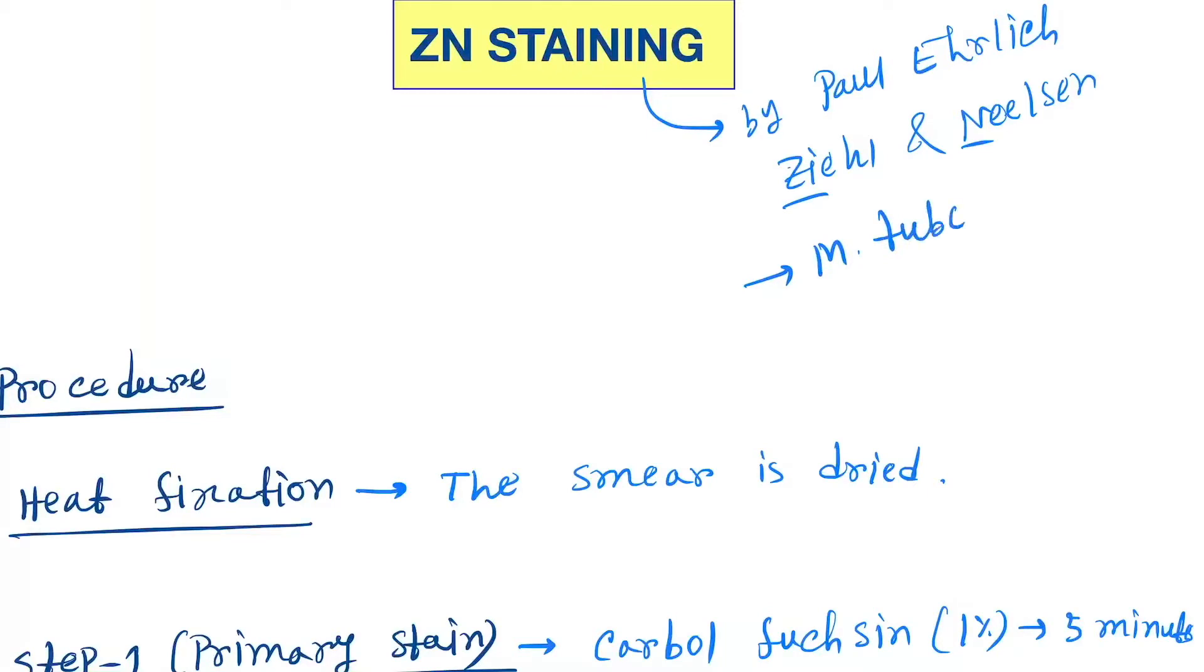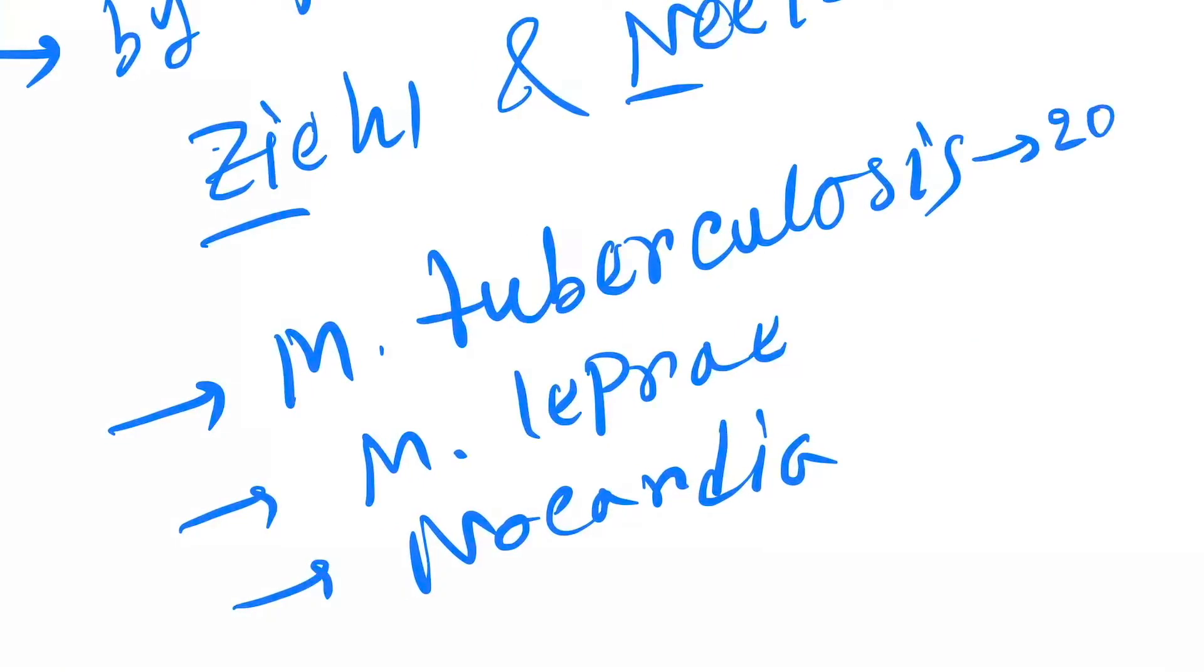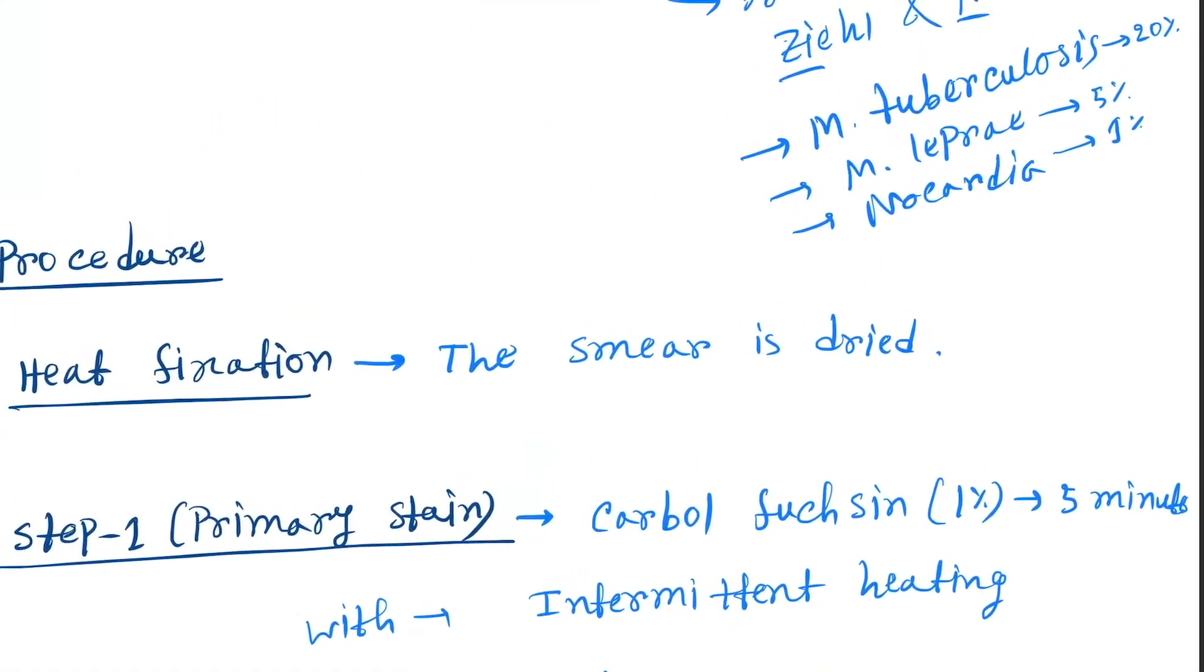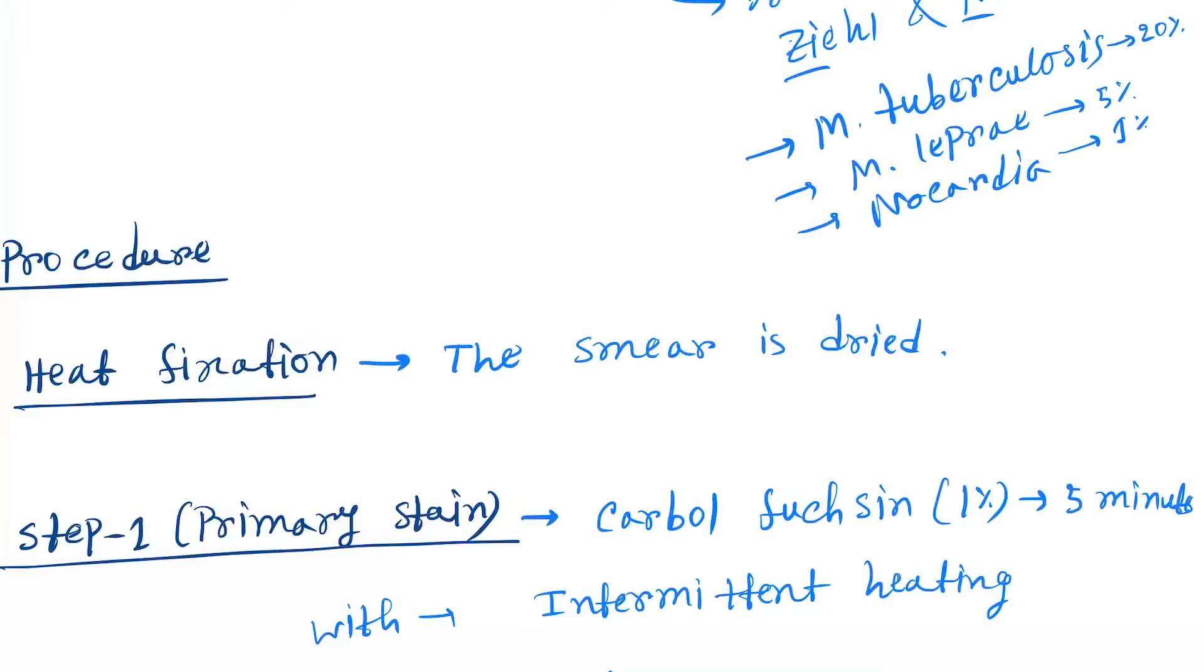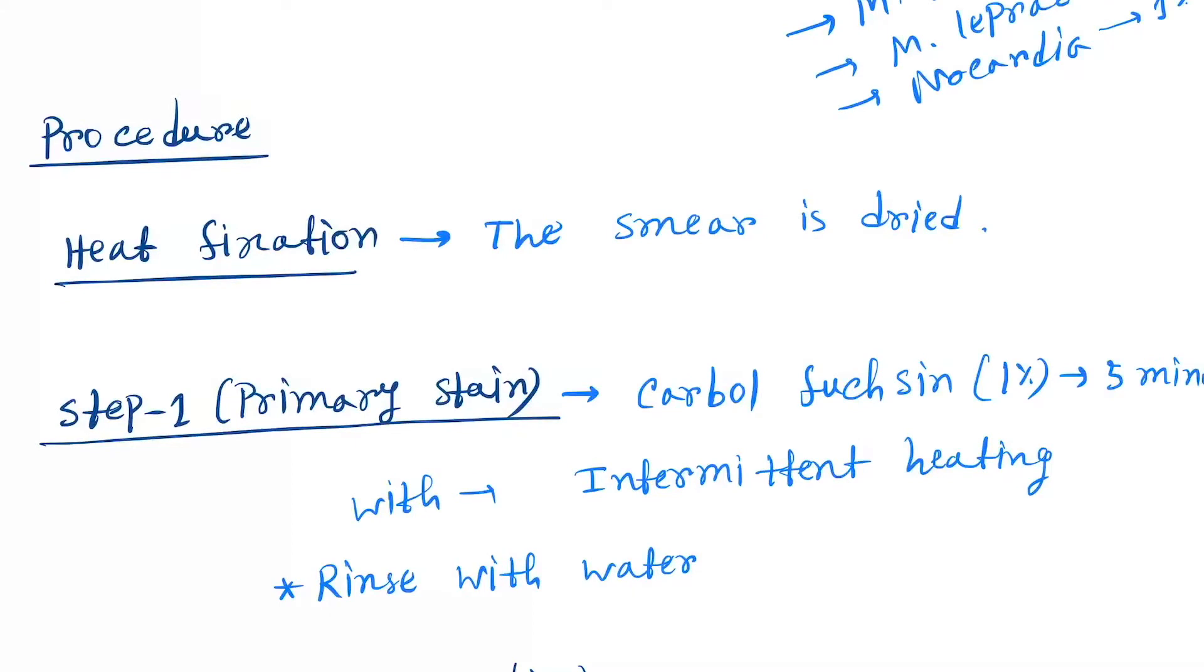It is done for Mycobacterium tuberculosis, Mycobacterium leprae, and Nocardia. Different concentrations of acid are used: 20% for Mycobacterium tuberculosis, 5% for leprae, and 1% for Nocardia. It's also used for other organisms like parasites such as Cryptosporidium, Cyclospora, and Isospora.